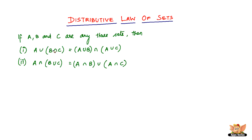It's like 2 times 3 plus 4 is equal to 2 times 3 plus 2 times 4. It's very similar to the way we apply the distributive law to multiplication. Anyway, let us quickly look into an example or an illustration to further understand the concept of distributive law of sets.